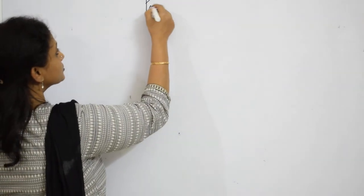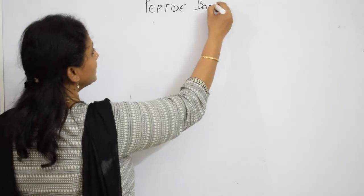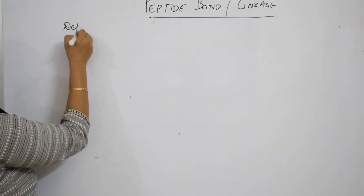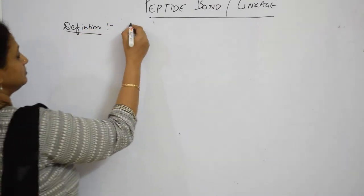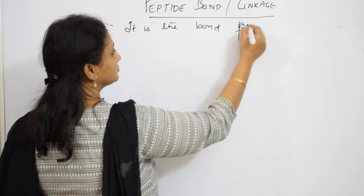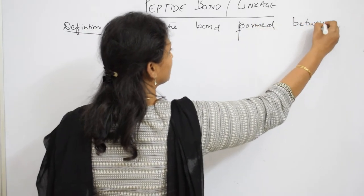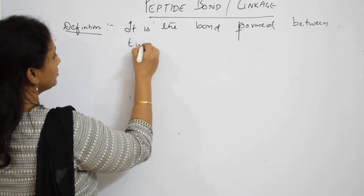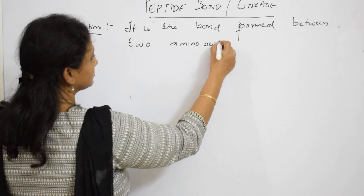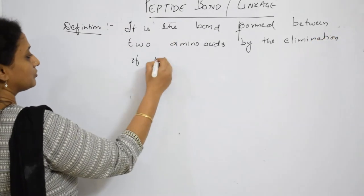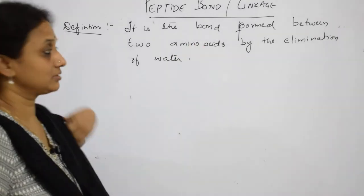Let us learn one topic called peptide bond today. We've learned isoelectric point, so now let us learn what is peptide bond or peptide linkage. The definition for peptide linkage is: it is the bond formed between two amino acids by the elimination of a water molecule, and this is called a peptide bond.